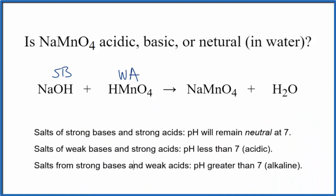Now we know the strengths and we look at our list. We have a strong base and a weak acid. So by the rules, we would expect the pH to be greater than seven. It would be alkaline or basic.